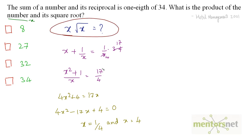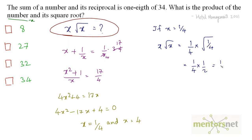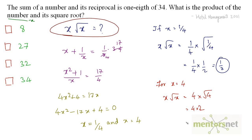Let us solve this for x equals 1 by 4 and x equals 4. If x is equal to 1 by 4, then x root x equals 1 by 4 times the square root of 1 by 4, which is 1 by 4, giving 1 by 8. Since 1 by 8 is not in the answer list, let us solve for x equals 4. We get x root x equal to 4 times root 4, which is 4 times 2, which is 8. So our answer is option 1.